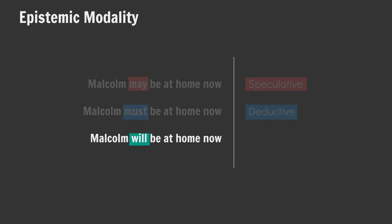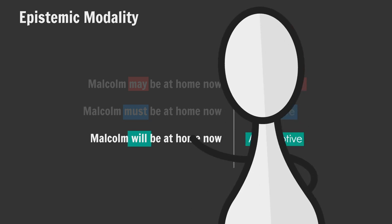And finally, 'Malcolm will be at home now' is an example of assumptive modality, which deals with inference from what is generally known. Maybe it's the weekend and it's generally known that Malcolm doesn't work weekends, so it would be reasonable to assume that he is at home, albeit he could very well be away visiting family. Side note: English's 'will' also signals future tense and future habituality and a whole bunch of other stuff. English's future is seriously moody — remember that.